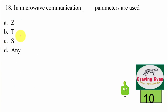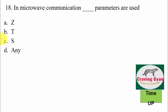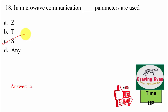Question 18: in microwave communication, which parameters are used — Z parameters, T parameters, S parameters, or any parameters of your choice? In microwave communication we make use of S parameters, hence the correct option is option number C.